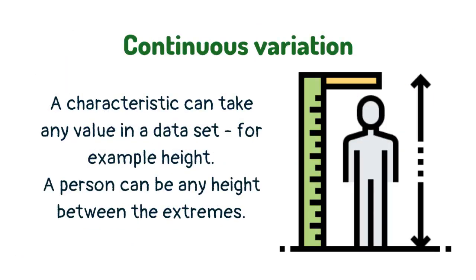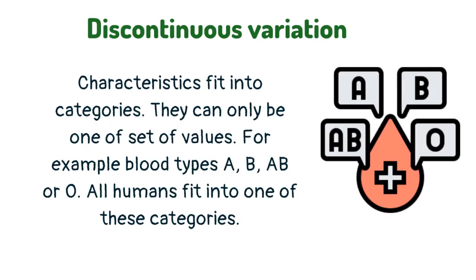A characteristic can take any value in a data set — for example, height. A person can be any height between the extremes. Some characteristics fit into categories and can only be one of a set of values. For example, blood types A, B, AB, or O — all humans fit into one of these categories.